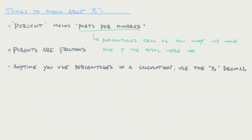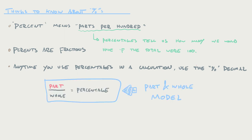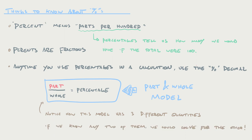Anytime you use percentage in a calculation, you want to be using the percent decimal — when you're actually using it in a calculation, you don't want to use the whole number percent like 40%, you want to use 0.4. Notice that the part and whole model has three different quantities in it, so if you know any two of them you'll be able to solve for the other. Sometimes we know the part and the whole and need the percentage; sometimes we know the part and the percentage and need to figure out the whole; and sometimes we know the whole and the percentage and need to figure out the part.